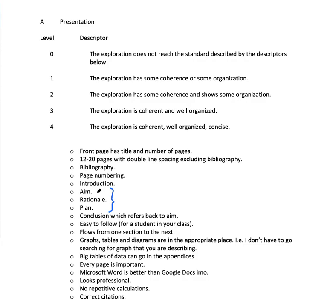A plan is how are you going to do it? You're going to go to the football pitch, take a video, record yourself taking a free kick, find a model, do some calculus, compare it to Messi's free kick — that's the plan. Then at the end, you have a conclusion which refers back to the aim. You need an introduction and a conclusion — you absolutely have to have those two parts.